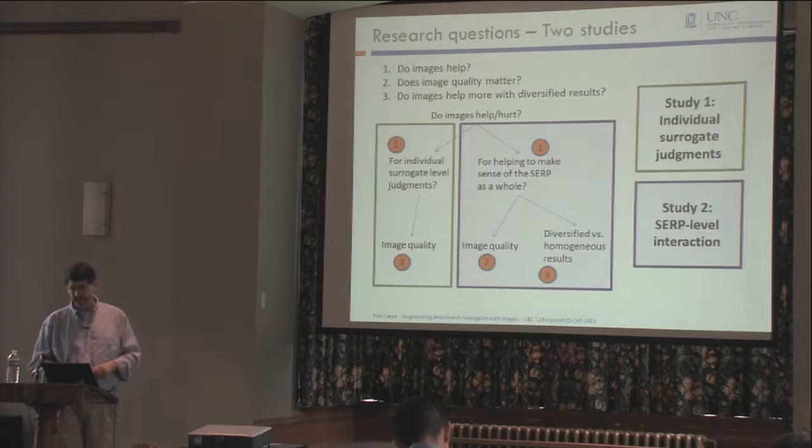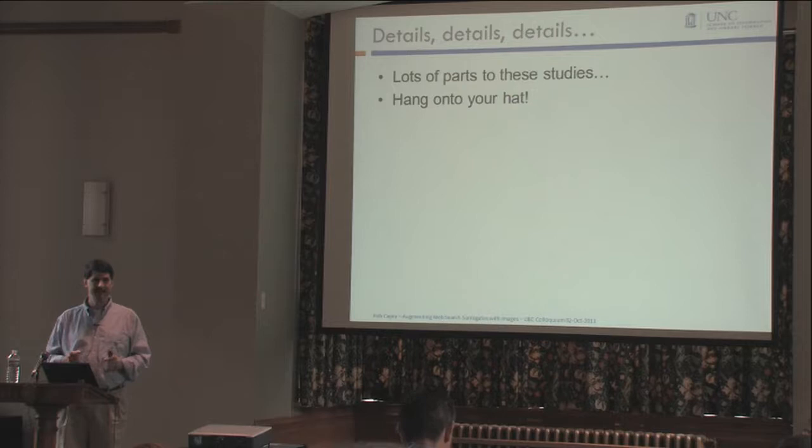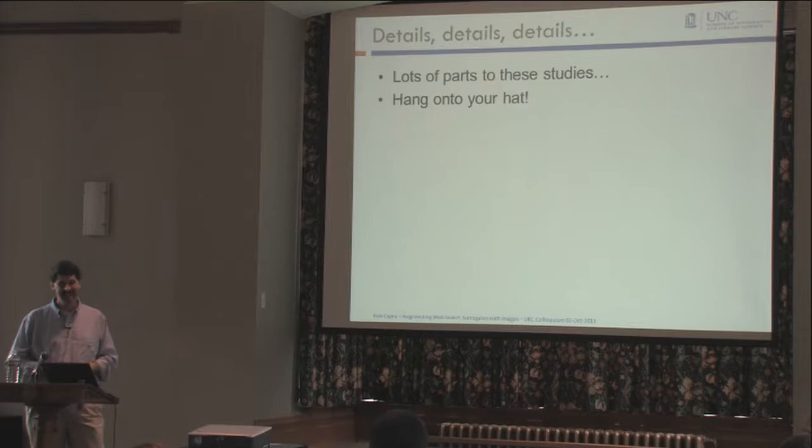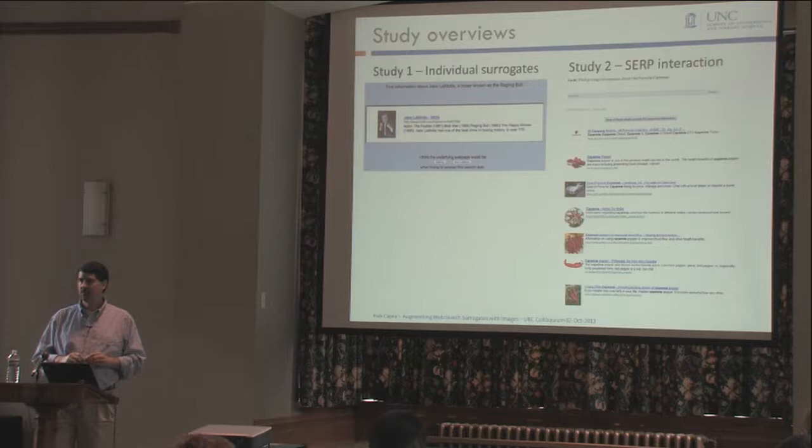I'm going to go through a lot of details on these studies, so hang on to your hats — these were complicated studies. I want to give an overview of each of the two studies before going into the experimental variables. In the first study, we asked people to make individual surrogate judgments. We showed you a surrogate, gave you a task — like 'find information about this boxer Jake Clamata' — and you had to make a judgment: is this underlying page useful or not?